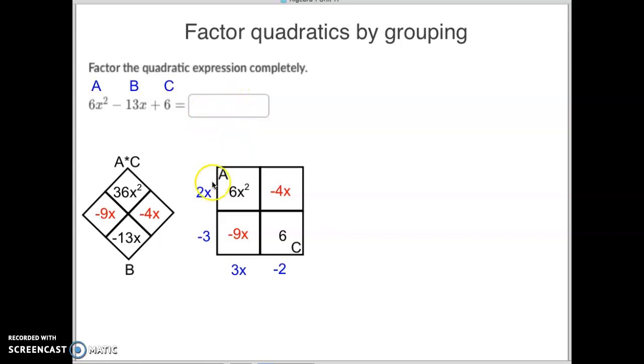You will notice on the answer I will type up here, I've got a 2x minus 3 and a 3x minus 2. There it is right there. There are 3x minus 2, which came from here, and the 2x minus 3, which came from right here.